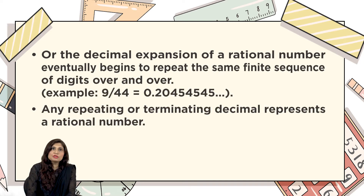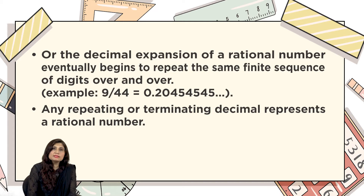Or the decimal expansion of a rational number eventually begins to repeat the same finite sequence of digits over and over. For example, the fraction 9/44 has a repeating decimal: 0.204545454... — the digits 45 repeat over and over. In other words, any repeating or terminating decimal represents a rational number.